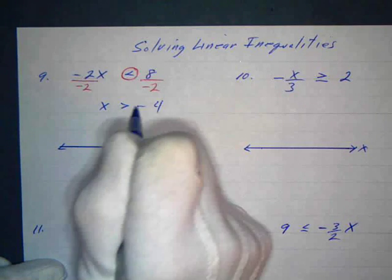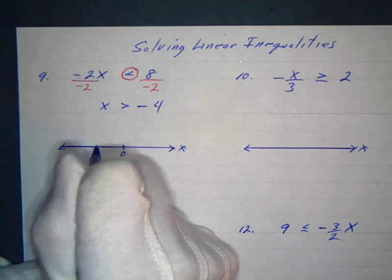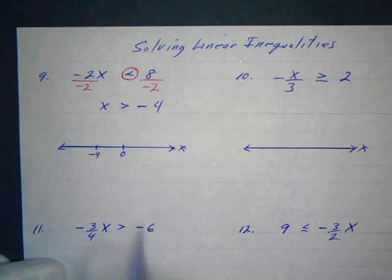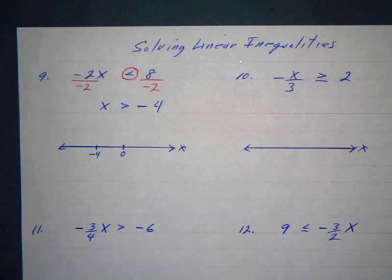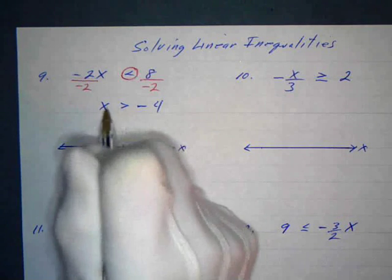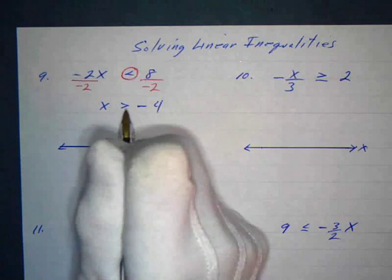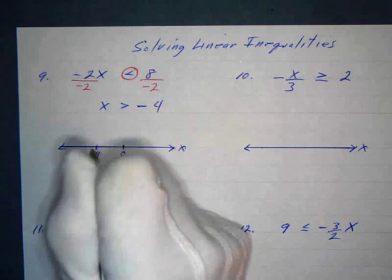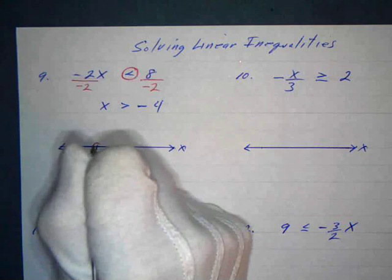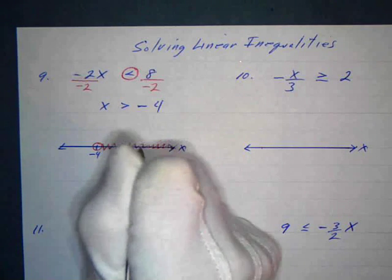So x is greater than negative 4. I'll put 0 on my number line, and I know negative 4 goes to the left of 0. We're just interested in 0 and negative 4. Since x is greater than negative 4 and my variable is on the left, I'm going to the right of negative 4 but not equal to it, so I put an open circle at negative 4 and shade to the right.